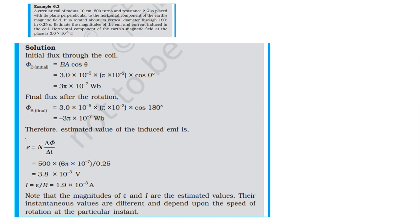Looking at the magnitude: flux = B × A × cos(θ). B is 3 × 10⁻⁵ tesla. For the circular coil, the area is π × r², where r = 10 cm = 10 × 10⁻¹ = 0.1 m. So the area is π r².